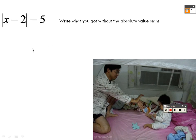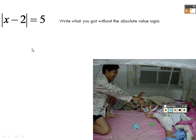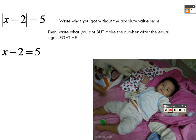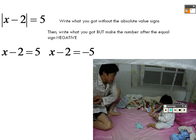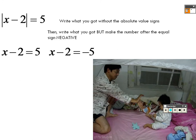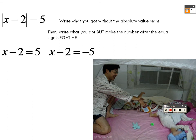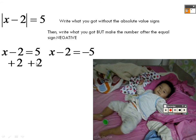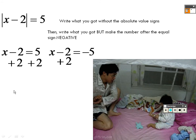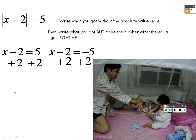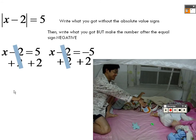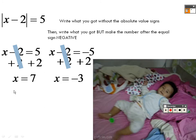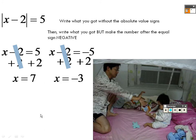Write what you got without the absolute value sign, then take that and make it negative. Adding 2 to both sides gives x equals 7 and x equals negative 3 as your answers.